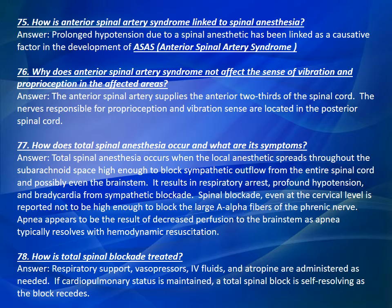Question 77: How does total spinal anesthesia occur and what are its symptoms? Total spinal anesthesia occurs when the local anesthetic spreads throughout the subarachnoid space high enough to block sympathetic outflow from the entire spinal cord and possibly even the brainstem. It results in respiratory arrest, profound hypotension, and bradycardia from sympathetic blockade. Spinal blockade, even at the cervical level, is reported not to be high enough to block the large A-alpha fibers of the phrenic nerve. Apnea appears to be the result of decreased perfusion to the brainstem, as apnea typically resolves with hemodynamic resuscitation.